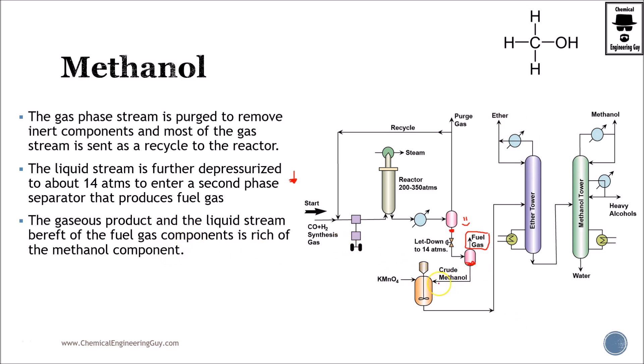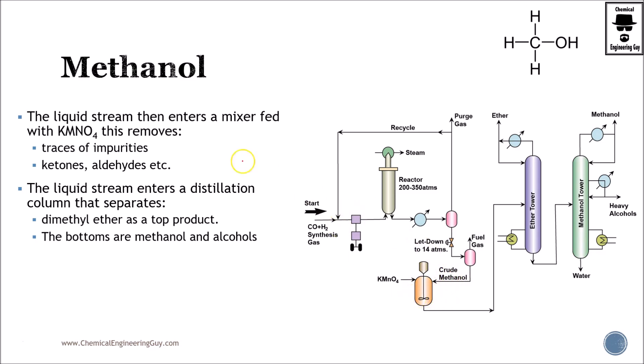We will now call this crude methanol which has got to be treated. We're going to send this to a mixer, which technically speaking is a reactor, but in the industry we call this the potassium permanganate removal, because this is an oxidizer that will remove trace impurities, ketones, and aldehydes. Now that we have this, it keeps going and we send this to the ether tower. Why ether tower? Because this is the easiest to separate, because this is non-polar and all the other alcohols will be polar. So the volatility of ether is very high. Just with this ether tower we separate most of the dimethyl ether.